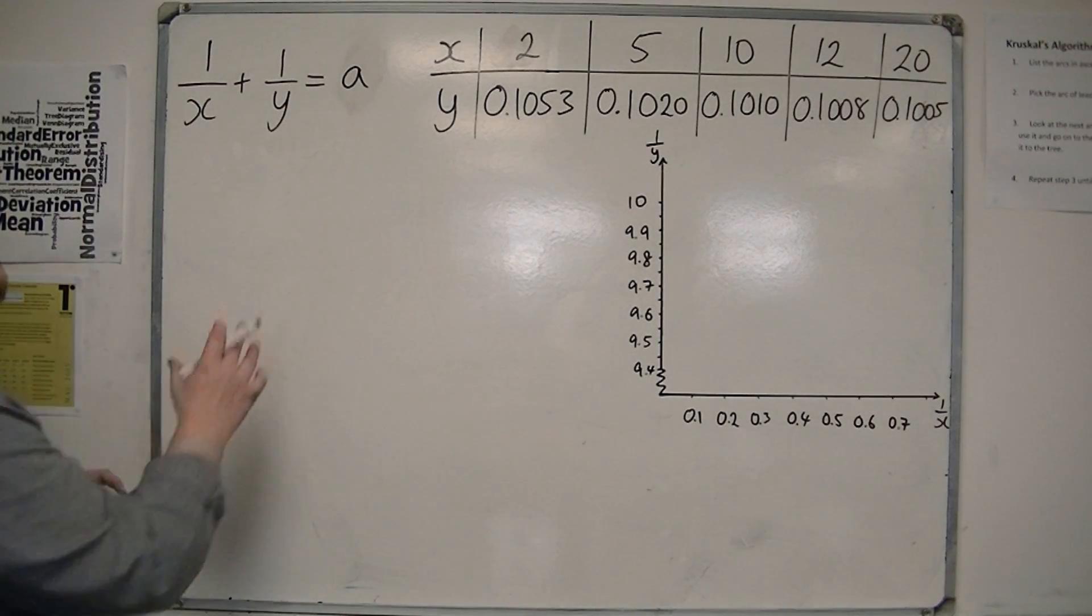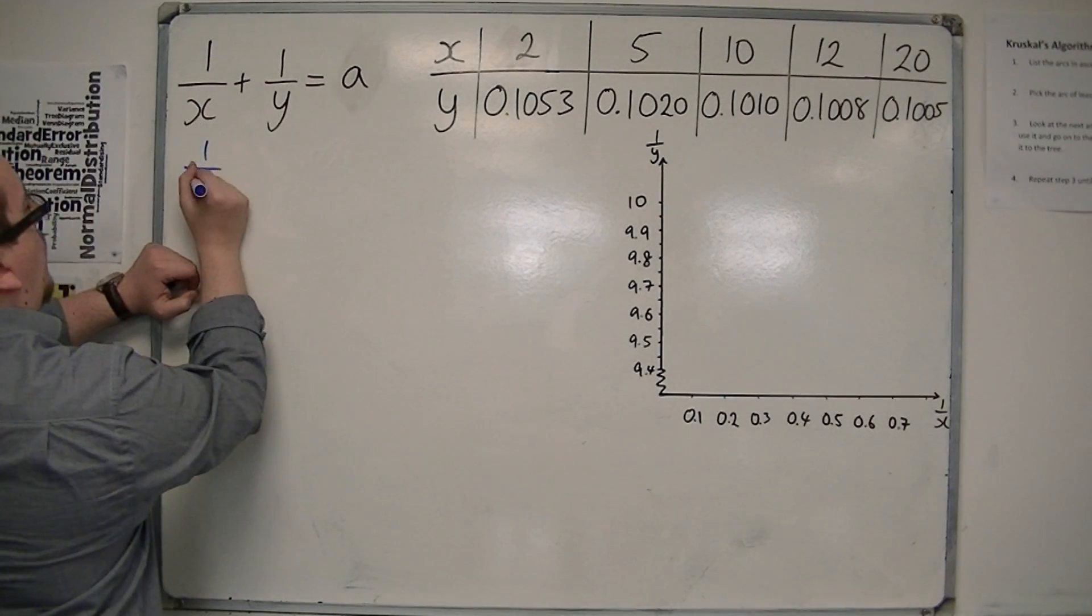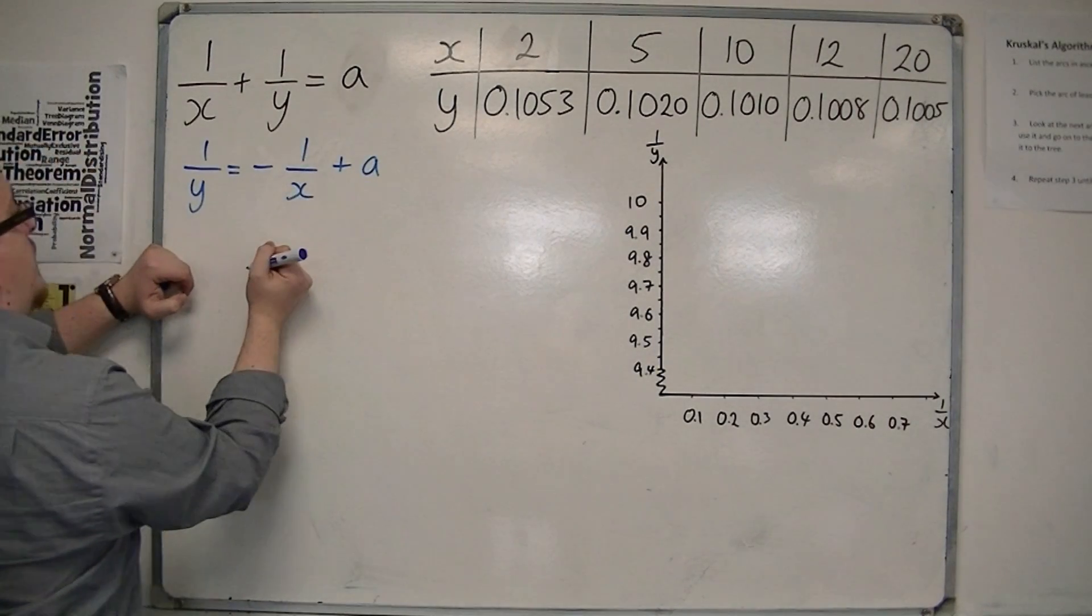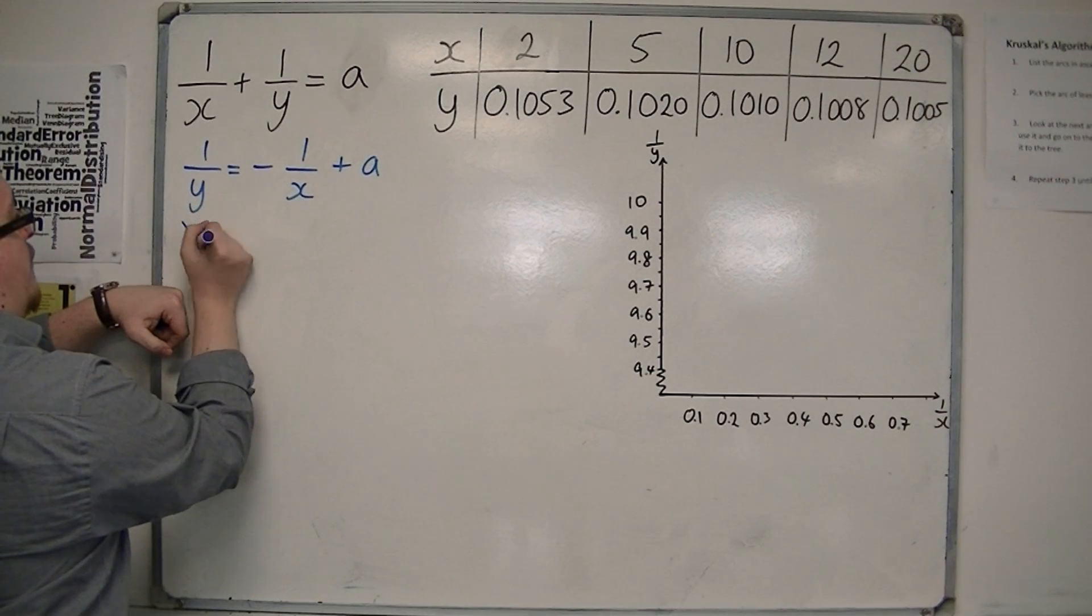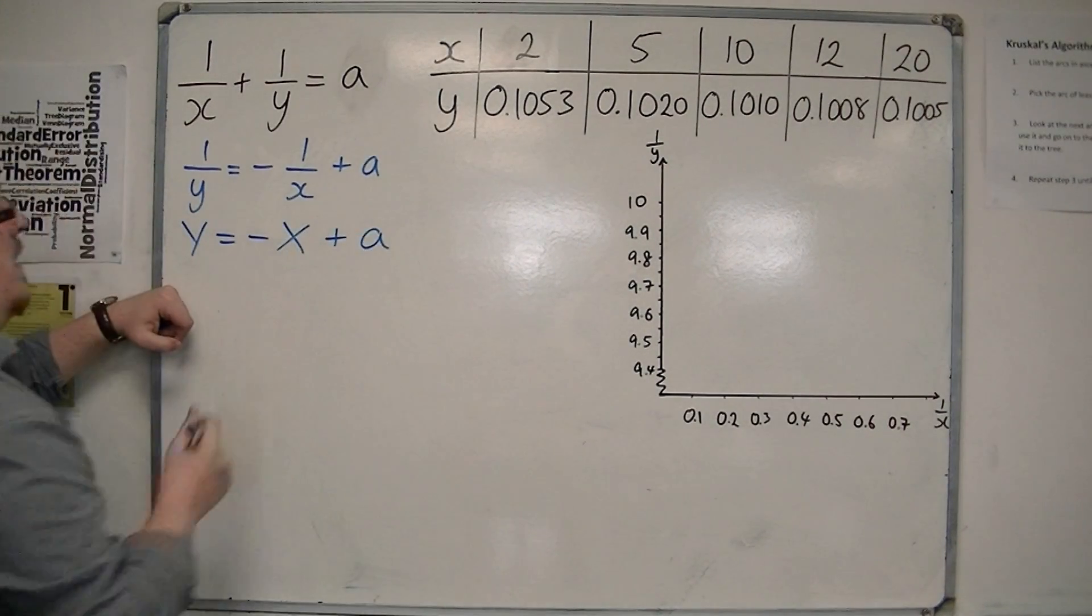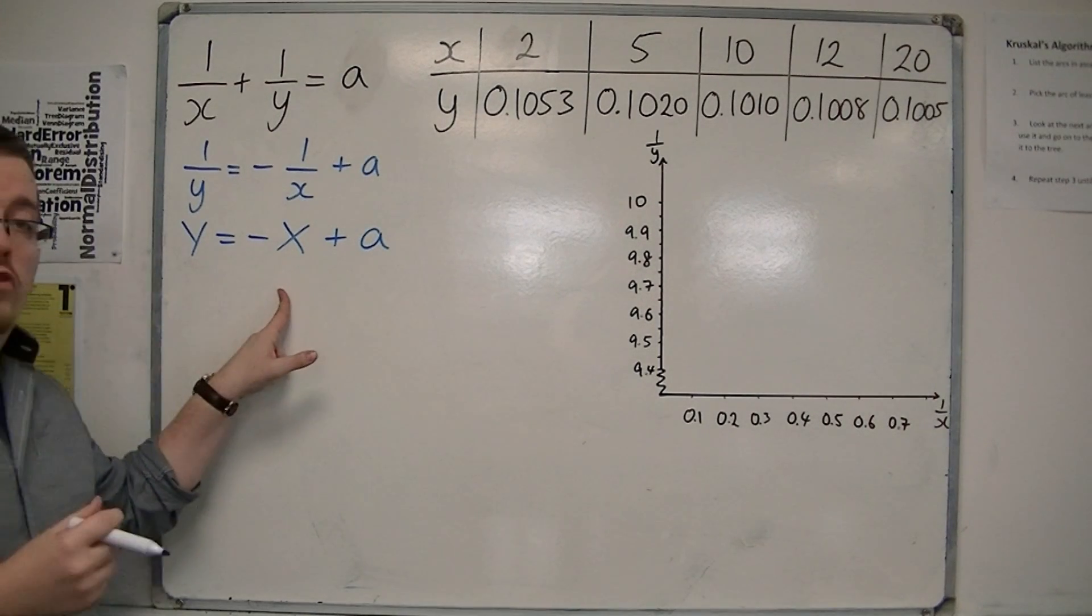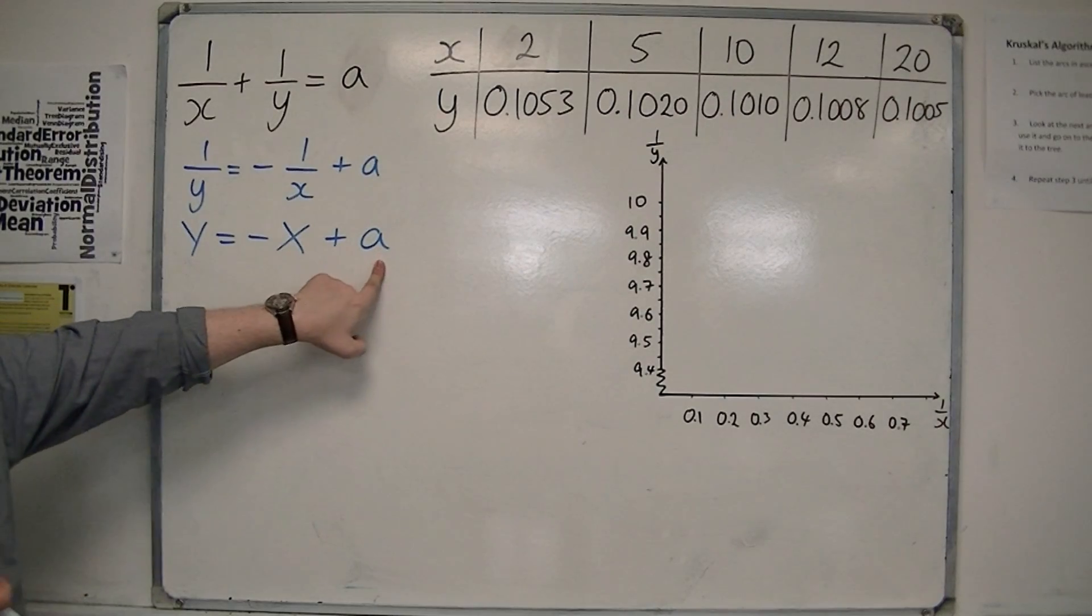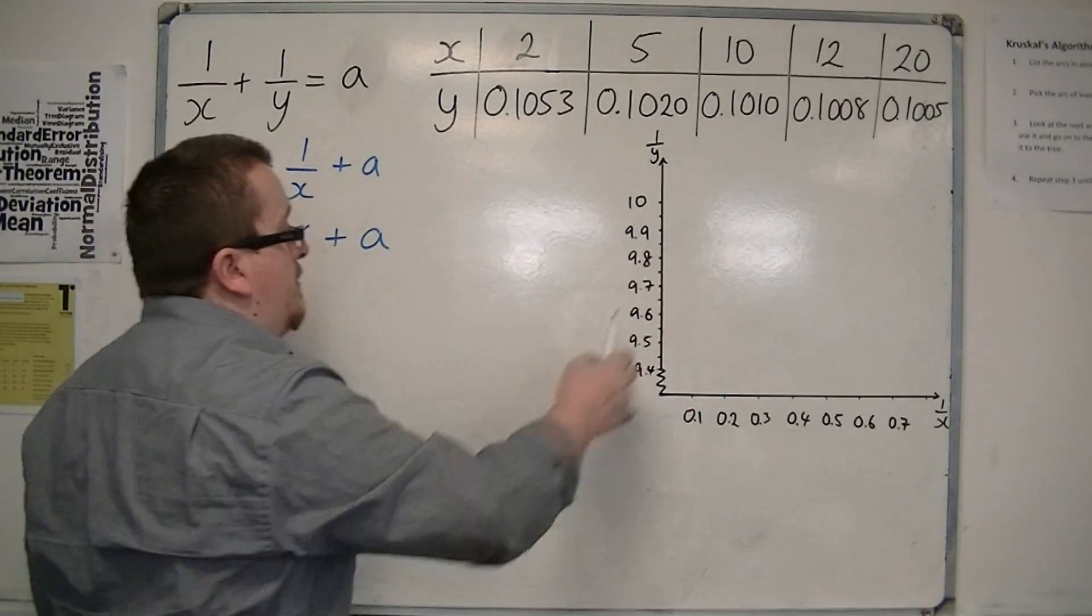Because if I can rearrange that into 1 over y is equal to minus 1 over x plus a, then this is in the form of capital Y equals minus capital X plus a. So it looks like a linear graph with a gradient of minus 1 and going through a, the y-intercept of a.